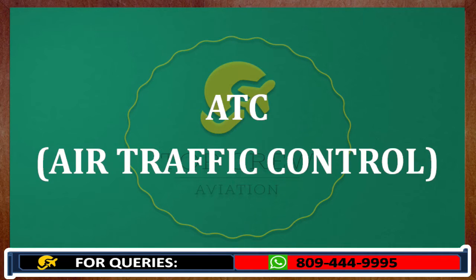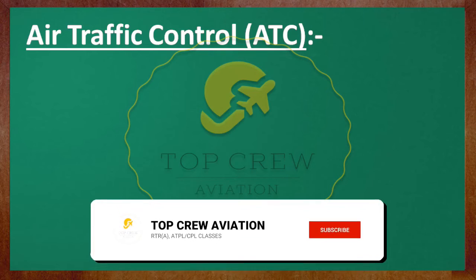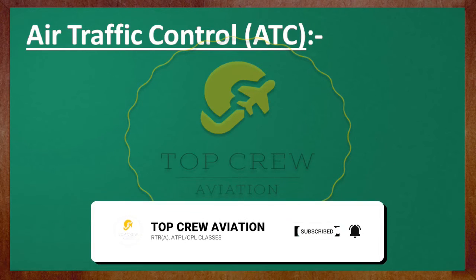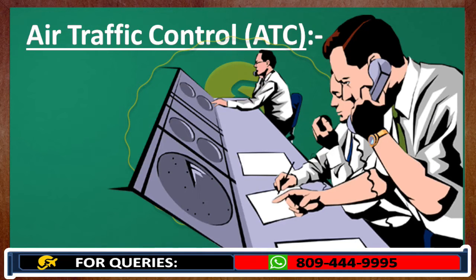Just to maintain orderly flow of traffic, we have assigned jobs to different people, like for ground and upper levels above ground also. It has been divided into a couple of layers and we call them by different ATC names so that we can maintain it properly, because it's a complex job.